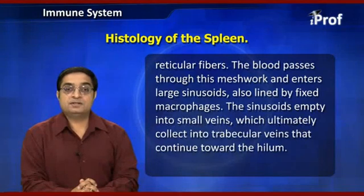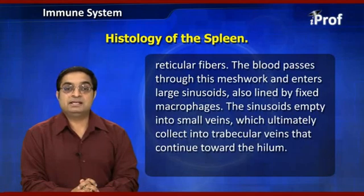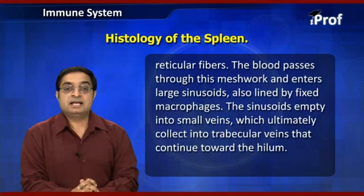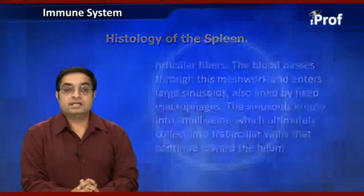The sinusoids empty into small veins which ultimately collect into trabecular veins that continue toward the hilum. This circulatory arrangement gives the phagocytes of the spleen an opportunity to identify and engulf any damaged or infected cells in the circulating blood.